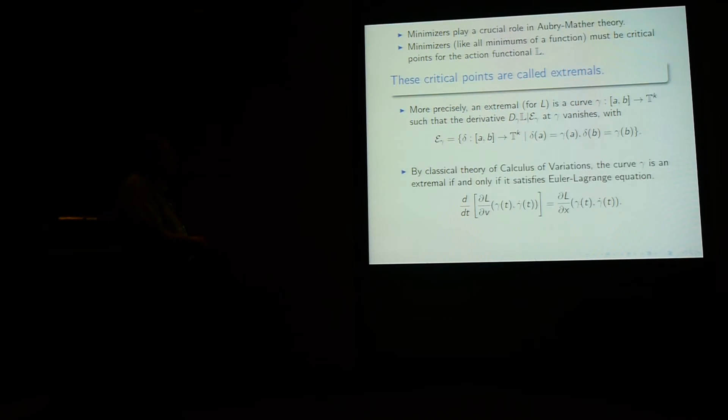So minimizer plays a crucial role in Aubrey-Mather theory. Minimizer, of course, if you try to find minimum of a function, what you should do is first find the critical point, the point at which derivatives are zero, and then look among them. So minimizer must be critical point for the action functional. So these critical points are exactly what are called extremal. More precisely, an extremal is a curve such that the derivative of the action gamma vanishes when you restrict it to the set of curves with the same endpoint as gamma. By classical calculus of variation, a curve is an extremal if and only if it satisfies the Euler-Lagrange equation. Therefore, the possible trajectories of our particle in the potential v are exactly the extremal.